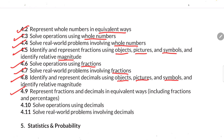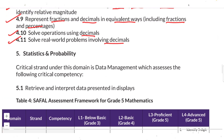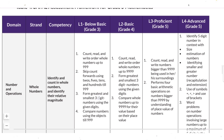Additional standards include: identify and represent decimals using objects, pictures and symbols; identify relative magnitude; represent fractions and decimals in equivalent ways including fractions and percentages; solve operations using decimals; and solve real-world problems involving fractions and decimals. The fifth and last domain is Statistics and Probability, with one standard: retrieve and interpret data presented in displays.